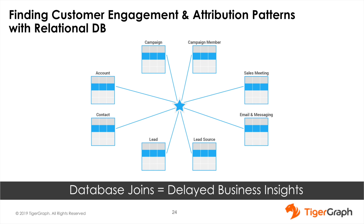Individual tables are excellent for indexing, searching, supporting transactions, and performing basic analyses. However, the relational database is poorly equipped to connect across multiple tables and to identify hidden relationships and patterns across multiple leads, campaigns, or opportunities. To find potential customer engagement and attribution patterns, analysts need to join a number of large tables. Such queries could take hours or even days to run, rendering any meaningful analysis of patterns for customer engagement among leads, contacts, campaigns, and opportunities practically impossible.